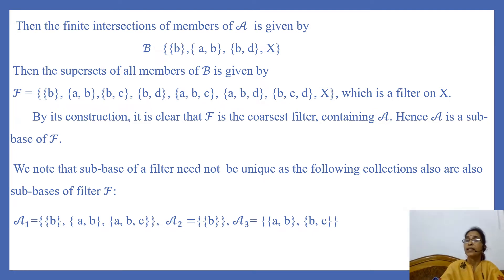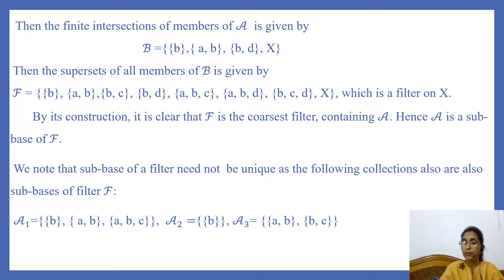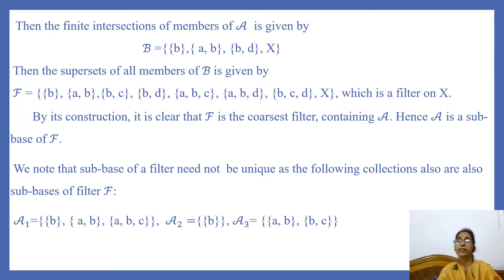If we take supersets of all members of B, then we get the collection F given by: singleton {B}, doubleton {A, B}, doubleton {B, C}, doubleton {B, D}, set {A, B, C}, set {A, B, D}, set {B, C, D}, and the whole set X. We find that F is a filter on X, and by its construction it is clear that F is the coarsest filter containing A, because we took finite intersections of members of A and then took supersets of members of collection B. Hence A is a sub-base of filter F.